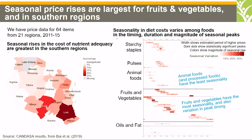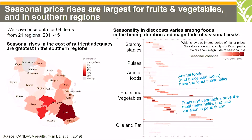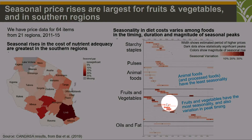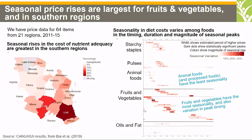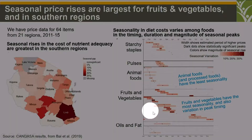You will notice that the variation of prices differs based on different food groups. For example, animal foods and processed foods have the least seasonality — again, shown by the intensity of the colors — and most seasonality is found between January and May. Fruit and vegetables have the most seasonality and also vary in peak times, as indicated by the intensity of the colors.